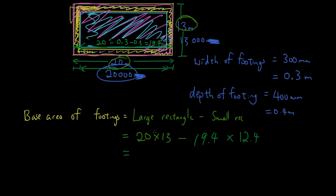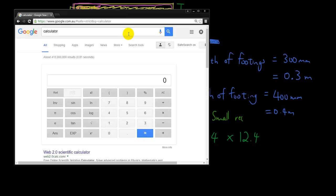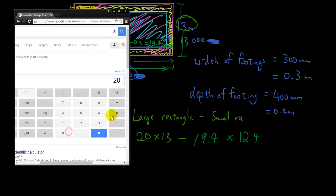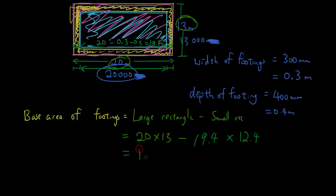So the base area equals 20 × 13 minus 19.4 × 12.4. Putting that into the calculator: 20 × 13 − 19.4 × 12.4 = 19.44 meters squared. That is the base area — the shaded yellow area of the footings.